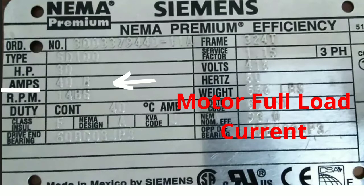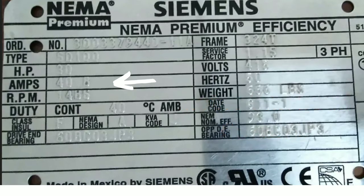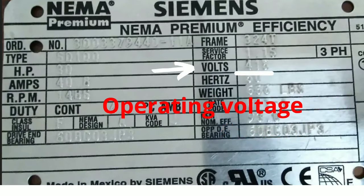Motor operating voltage is one of the most critical pieces of information on the nameplate. Connecting the motor on lower voltage causes the motor to draw higher current than it's rated, while connecting the motor on a higher voltage causes the motor winding insulation to break down and the motor to burn out.